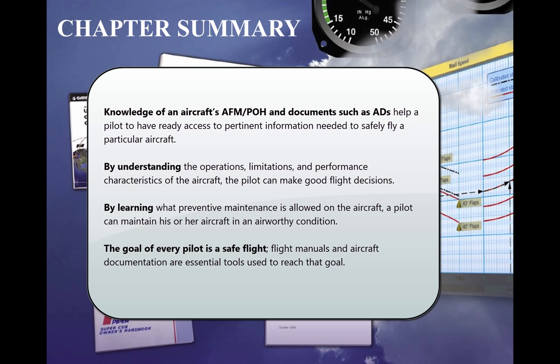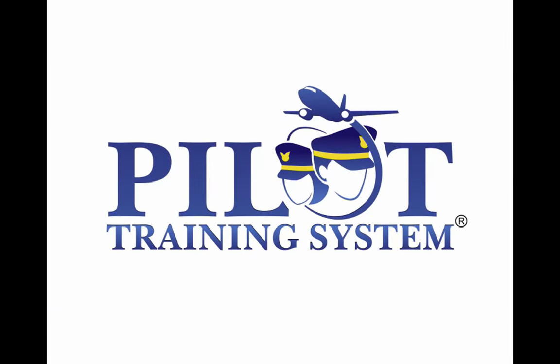Knowledge of an aircraft's AFM/POH and documents such as ADs help a pilot to have ready access to pertinent information needed to safely fly a particular aircraft. By understanding the operations, limitations, and performance characteristics of the aircraft, the pilot can make good flight decisions. By learning what preventive maintenance is allowed, a pilot can maintain his or her aircraft in an airworthy condition. The goal of every pilot is a safe flight. Flight manuals and aircraft documentation are essential tools used to reach that goal. This concludes your introduction to aircraft manuals and documents.